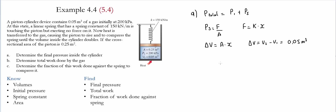The volume doubled, so comparing the two values gives us a change in volume of 0.05 meter cubed. Substituting back to get displacement x, we divide the change of volume by the cross-sectional area: 0.05 meter cubed divided by 0.25 meters squared. The displacement of the spring is equal to 0.2 meters.